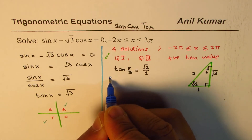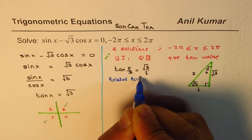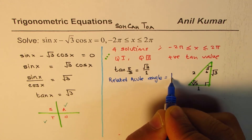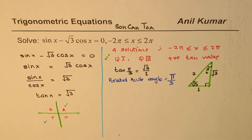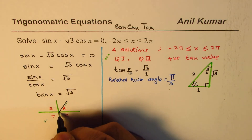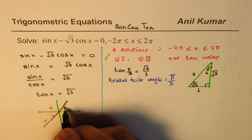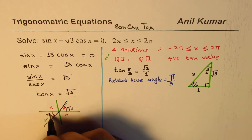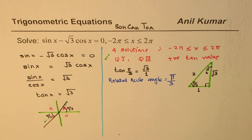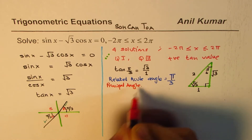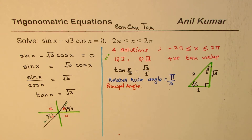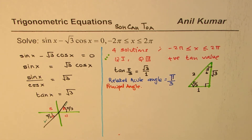What we have done here is found the related acute angle. The related acute angle is π/3, for which tan is square root 3. So the principal angle is π/3. For tan, the period is π, so we add π to get the next principal angle.